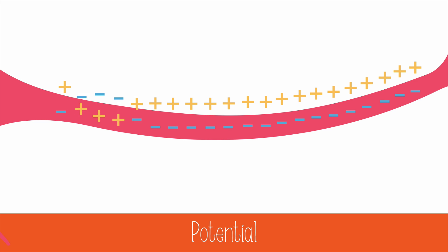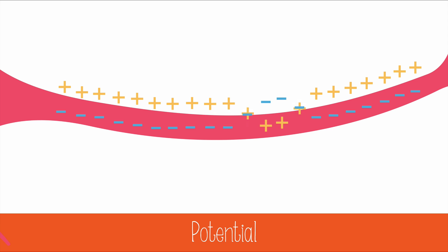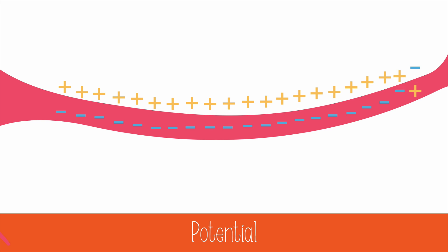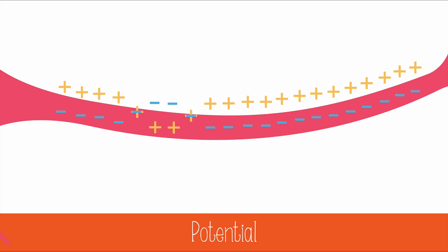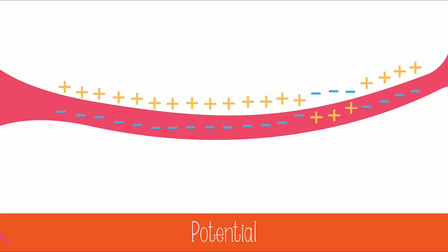The charged particles flow like a wave down the axon, moving in and out of the cell. The movement is mostly of positively charged ions, not negatively charged electrons like you might imagine.